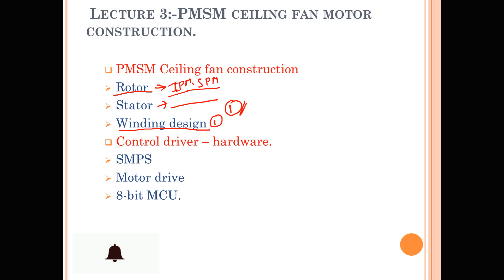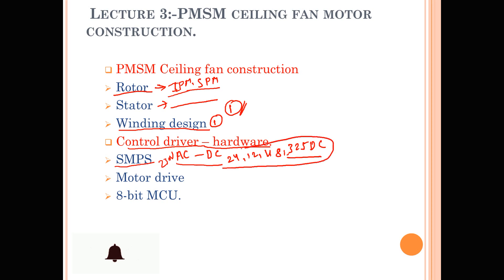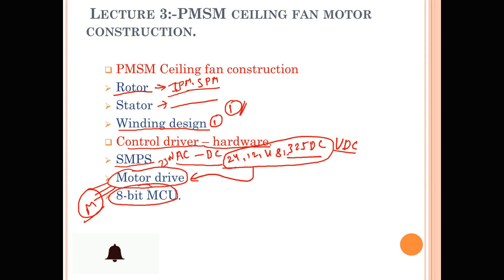The next session covers control drives and available hardware. For AC to DC conversion we use SMPS, where the input is 230 volts and the output can be 24 volts, 12 volts, 48 volts, or 325 volts DC. These DC voltages feed into the motor drive, which then provides three-phase supply to the BLDC motors. Microcontrollers — typically 8-bit — handle features like remote control and app control.